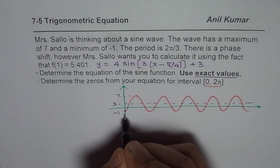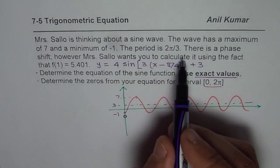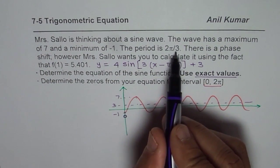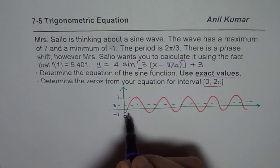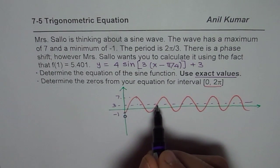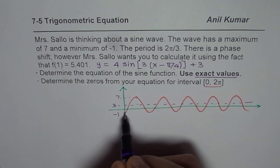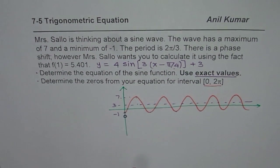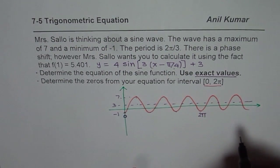Now what we can say from here is that, let us say this is 0, then 2π will be, since our wave has got a time period of 2π/3, we have 3 waves in 2π. So let us take this as a starting point. We have 1 wave, 2 waves, and 3 waves. So we can say 2π for us is this position, 3 waves correct.